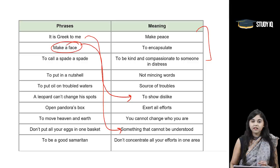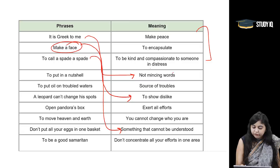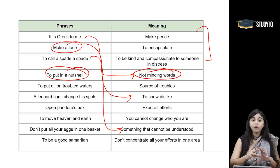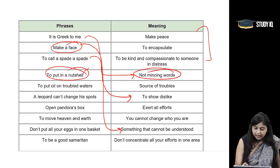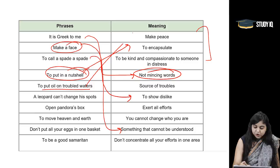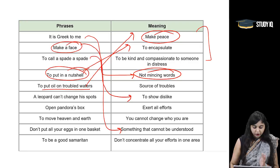'To call a spade a spade' — this particular idiomatic phrase ka arth hota hai speaking frankly and directly. 'To put oil on troubled waters' — jab aap kisi disturbance ko shant karne ki kooshish karte hai, that is when we use this phrase. So whenever you try to make peace, jab aap pacify kar dete hai, that is when we are using 'to put oil on troubled waters.'